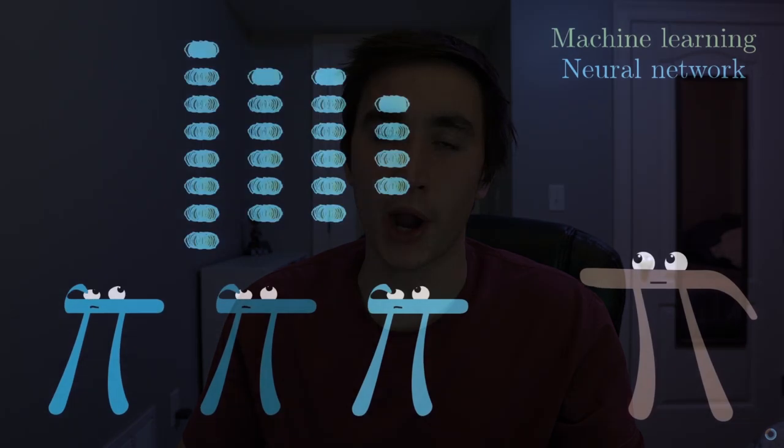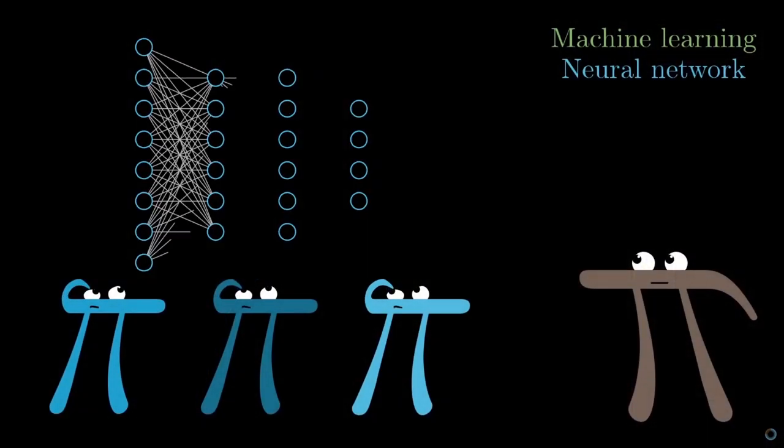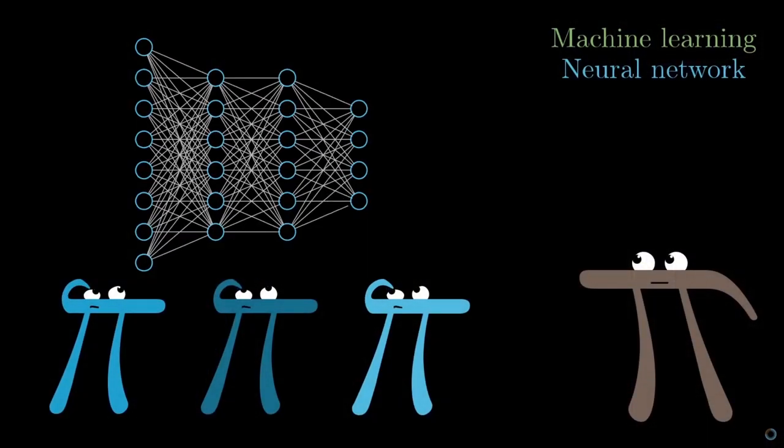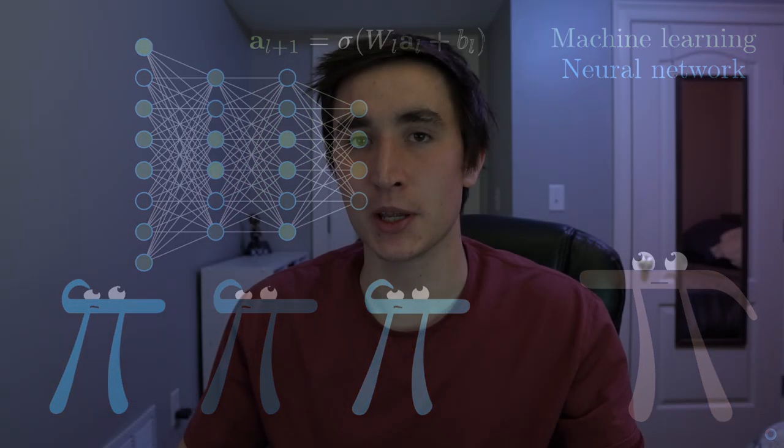For a great visual explanation of how neural networks work, I'd recommend checking out the video series that 3Blue1Brown did on the topic. He animates it beautifully and it can help drill down these high-level concepts before we move into actually coding networks.